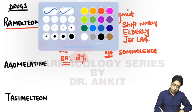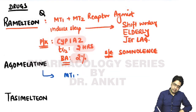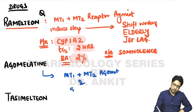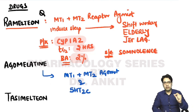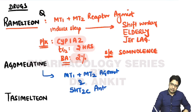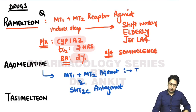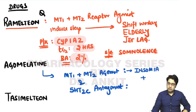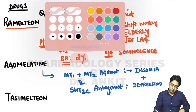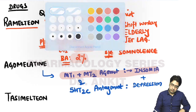Agomelatine is an MT1 plus MT2 agonist and also a 5-HT2C receptor antagonist. 5-HT stands for 5-hydroxytryptamine, which is serotonin. Because of its 5-HT2C antagonism, it reduces depression. It is therefore an approved drug for insomnia along with depression.